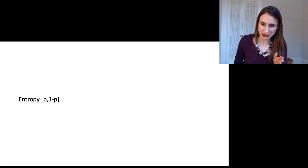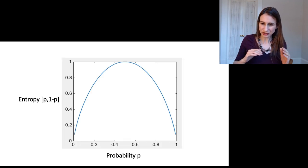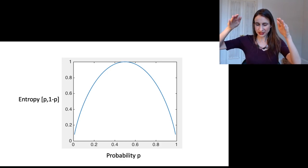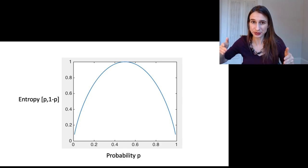So I'm going to plot entropy as a function of p for this coin. And as you can see, the fair coin has the largest amount of entropy. And then as the coin becomes more unfair, then the entropy decreases.